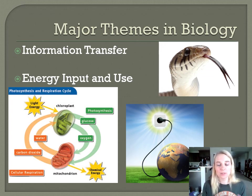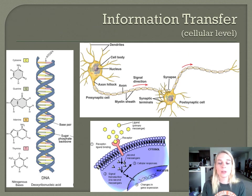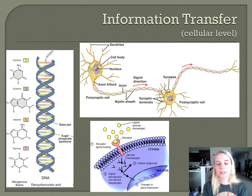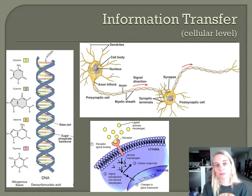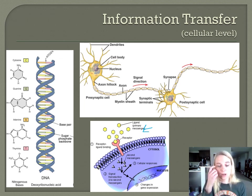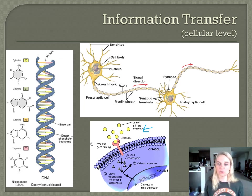Let's take a closer look at information transfer. At the cellular level, DNA is our molecule of heredity — that information is transferred from generation to generation. Neurons are one cell communicating to the next via electrical and chemical signals. And chemical communication messages coming into a cell membrane, with the cell recognizing those signals, is another example of how we think of information transfer at the cellular level.